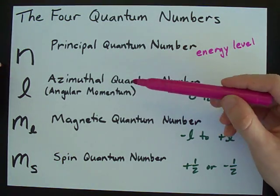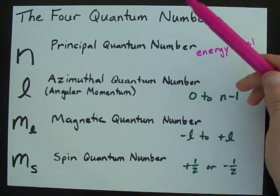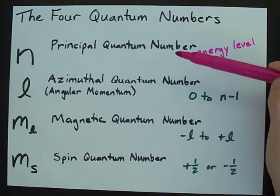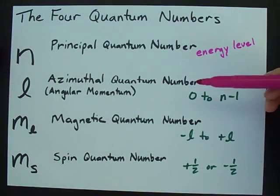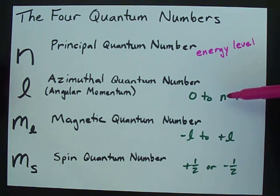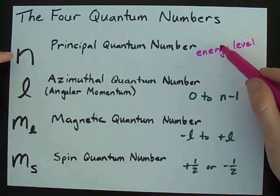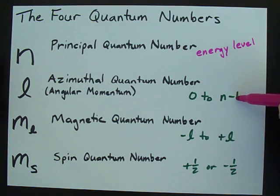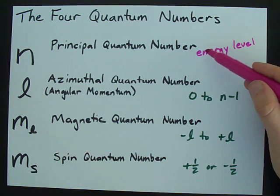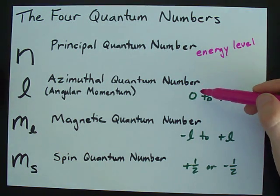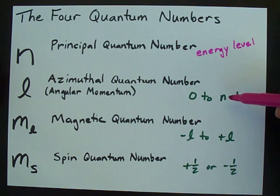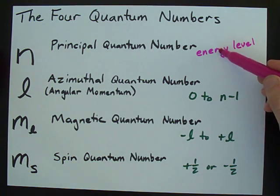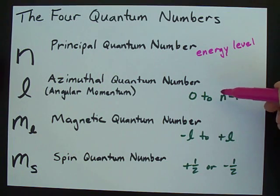L, which is the azimuthal quantum number or sometimes the angular momentum quantum number, goes from zero all the way up to whatever n is minus one. So if n is one, l can be zero to zero. For electrons in n equals two, l can be zero or one. For an electron in a third shell, l can be zero or one or two, and it goes on like that.